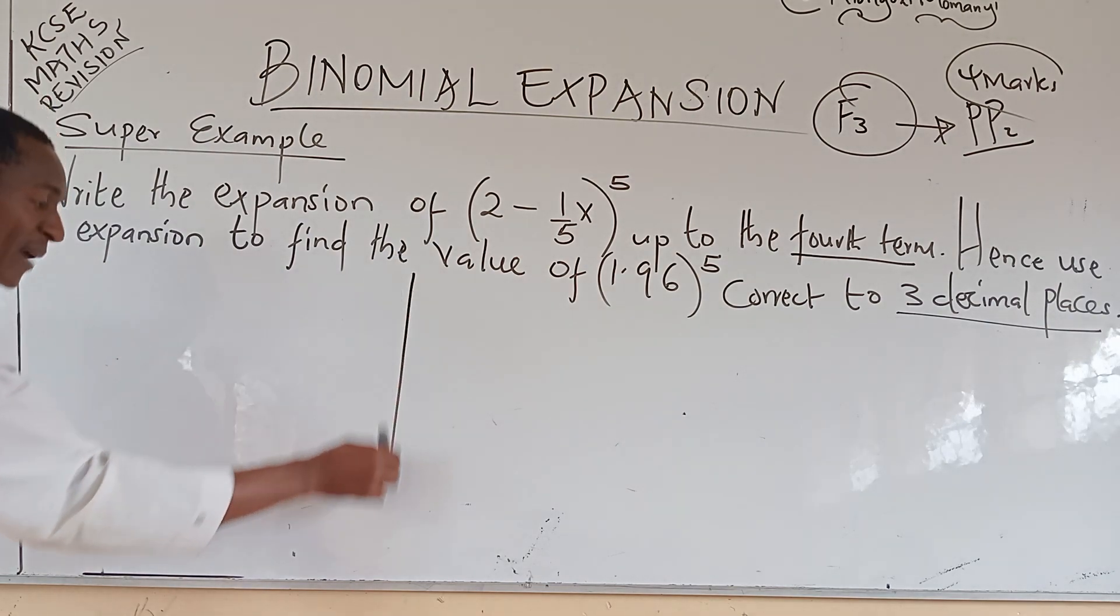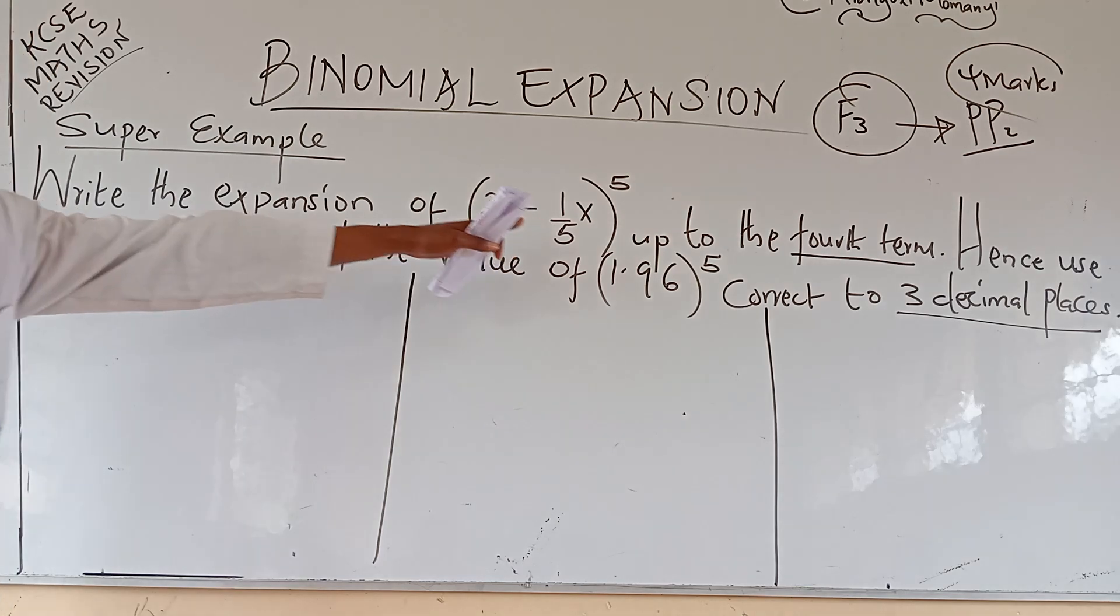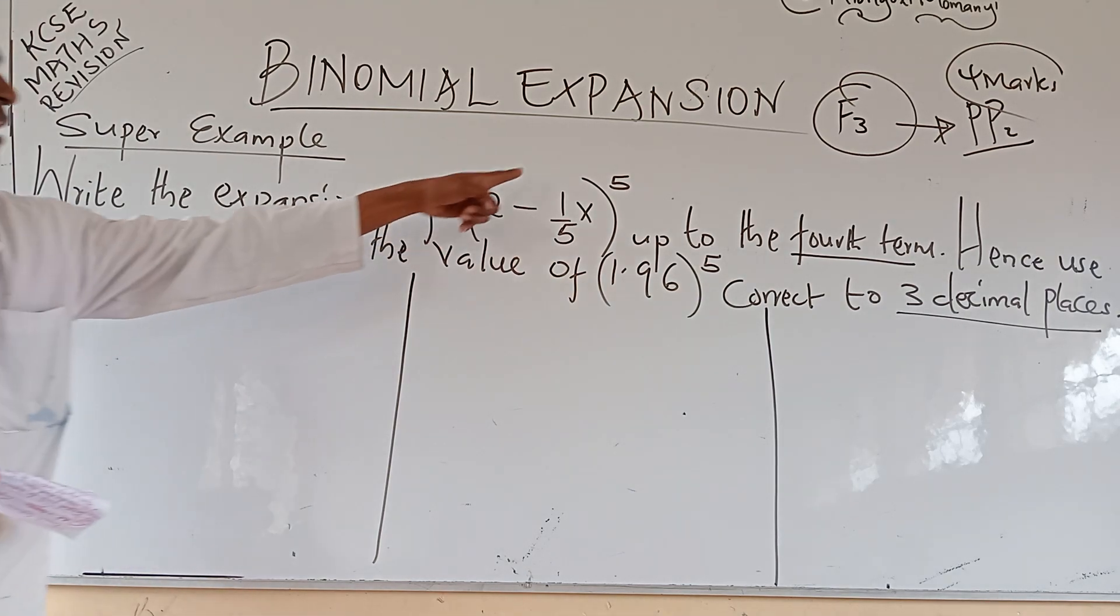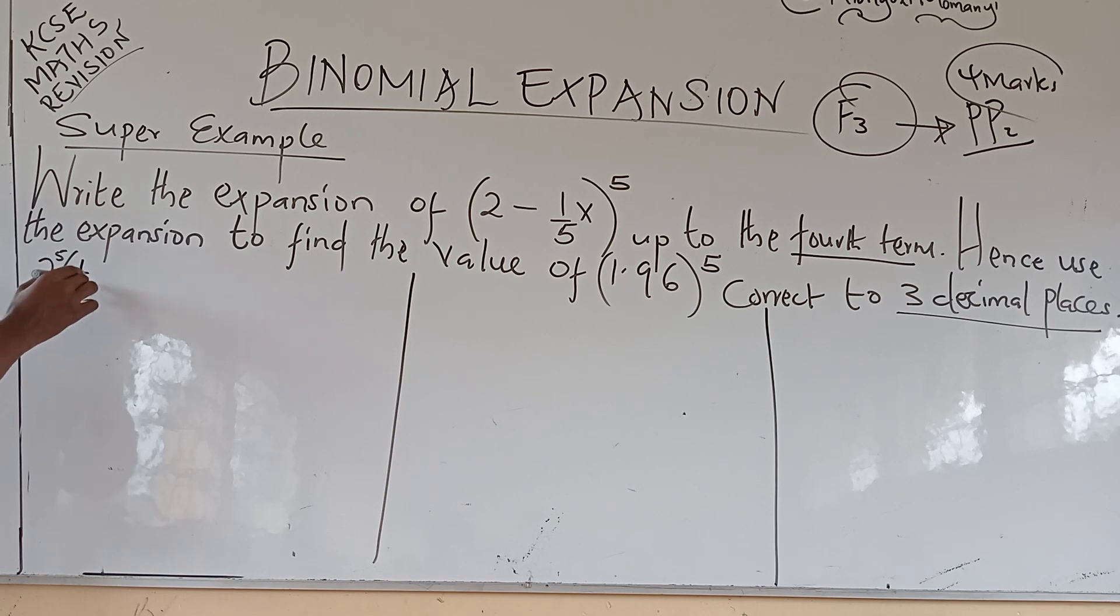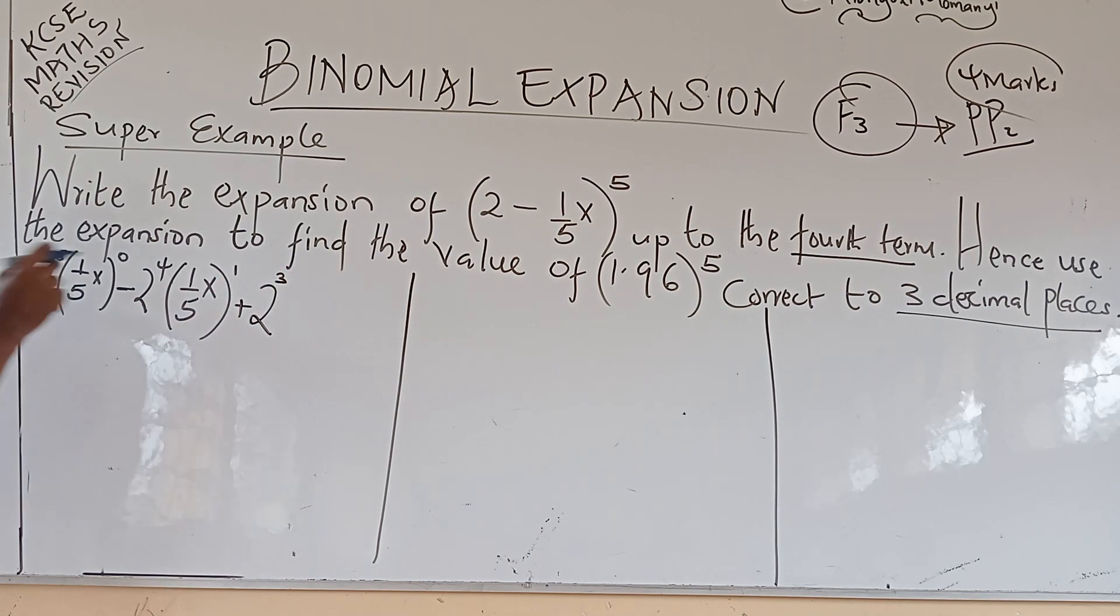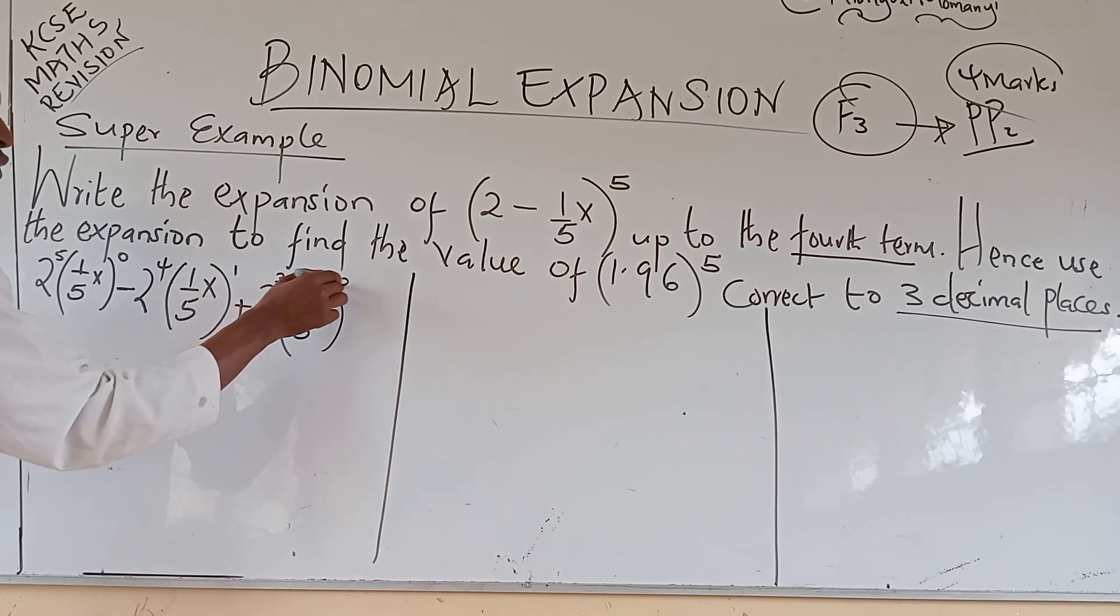We start by expanding this function in the ascending powers of x. So, two begins from power five. Two raised to power five, then one over five x power zero. Then, minus, because it is a subtraction. We get two raised to power four, then one over five x goes to, I should have started with zero here. From zero, it goes to one. Then, from a minus, we go to a plus. Two raised to power three, the ascending powers of two, and the ascending powers of the second factor. One over five x raised to power two. This is zero, one, two, plus.